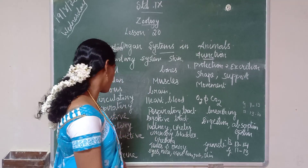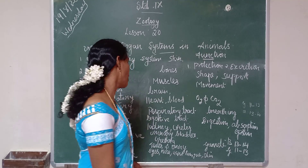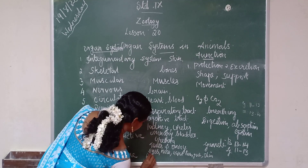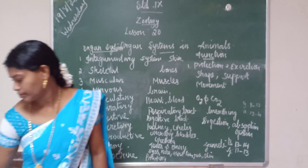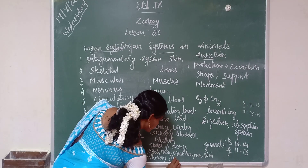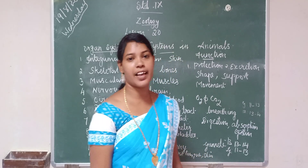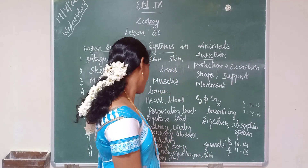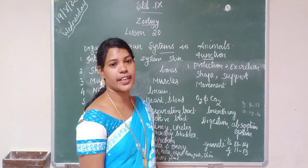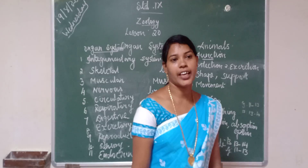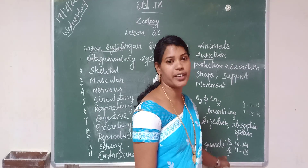The last one is the endocrine system. The organs are the glands: pituitary gland, adrenal gland, thyroid gland, parathyroid gland, and pineal gland. Its function is to coordinate all the body functions.